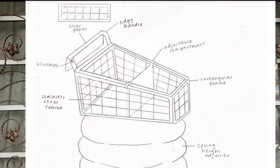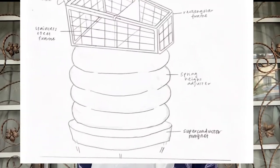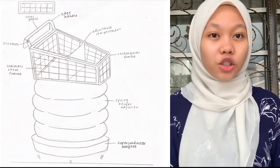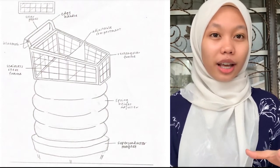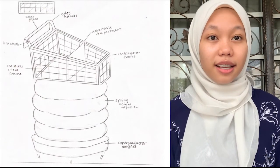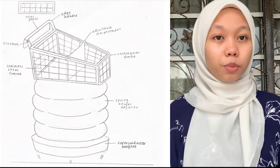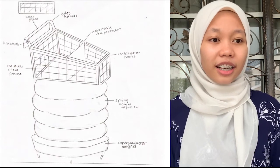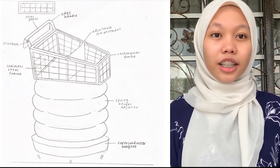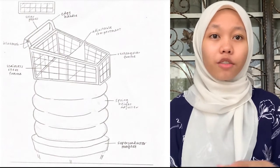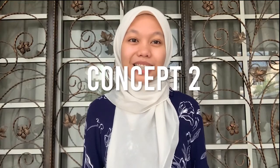For Concept 1: it has a rectangular-shaped frame made of stainless steel. It uses a spring concept to adjust its height, and since it uses less electricity, it is powered by solar energy, with the solar panel located at the handle. It has an edge handle and uses a superconductor as its movement mechanism, meaning it actually floats. For user interaction, it uses Bluetooth to connect to the mall app, which includes GPS navigation to different mall sections and a product scanner.